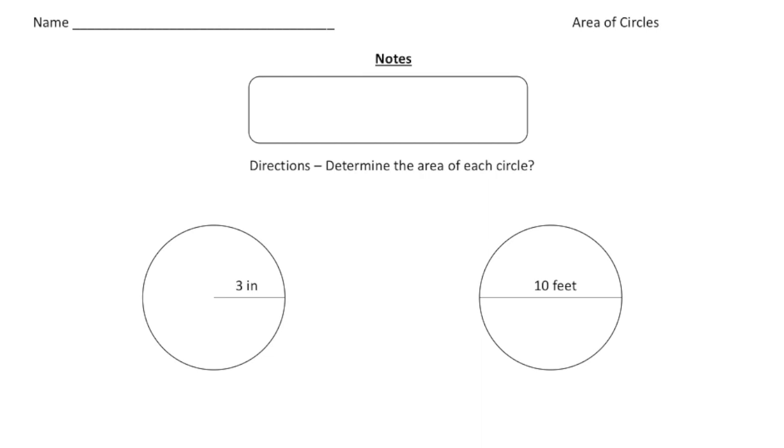Alright, so to find the area of a circle, it's pretty simple. There's a formula you need to write in this box. And that formula is area equals pi times radius squared. Alright, so that's the formula you need to know.